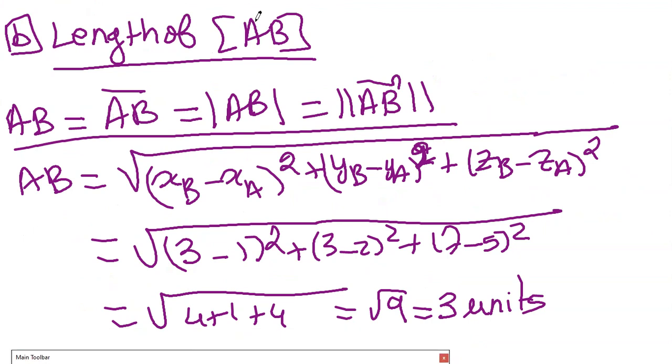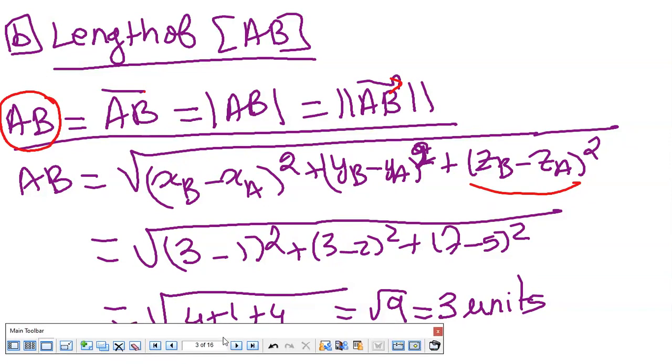What is the length of a segment? In 3D, it's exactly the same formula but with z extra. The notation could be AB like this, AB with a bar, or absolute value. The formula is: square root of (xB - xA)² + (yB - yA)² + (zB - zA)². I just replace and calculate to find the length or magnitude of any segment.